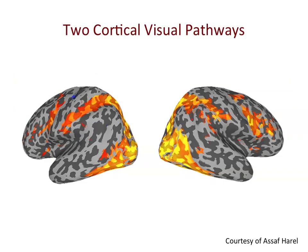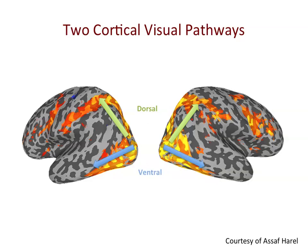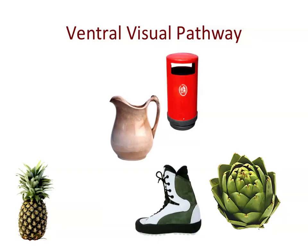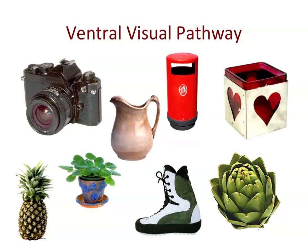The two cortical visual pathways are easy to see in humans with functional fMRI. Here I'm showing regions that are active when people perform simple tasks on visual objects such as a cow or a tree. Activity extends from the primary visual cortex in the occipital lobes of the brain, up into the parietal lobe forming the dorsal pathway, and down into the temporal lobe forming the ventral visual pathway. Here I'm going to focus on the ventral visual pathway, which is thought to be critical for our ability to easily recognize and identify visual objects.